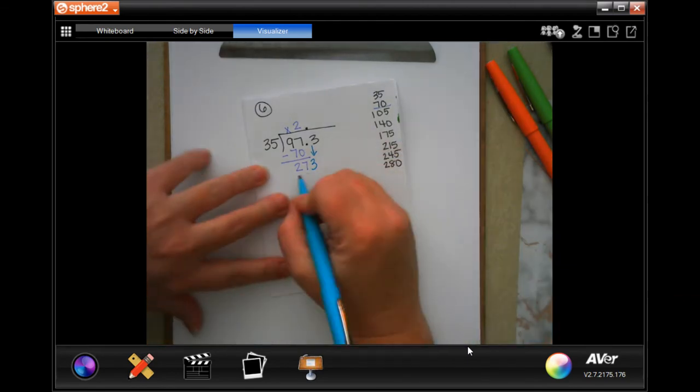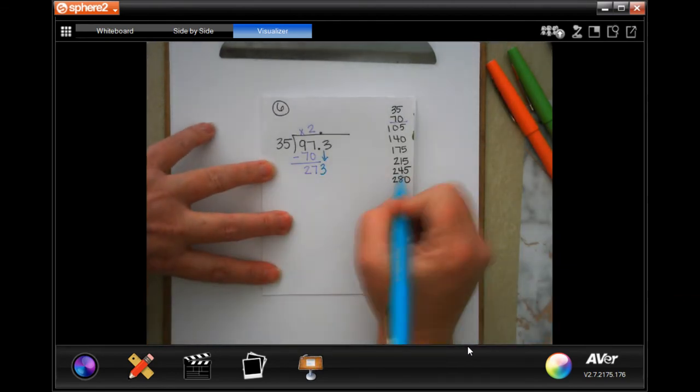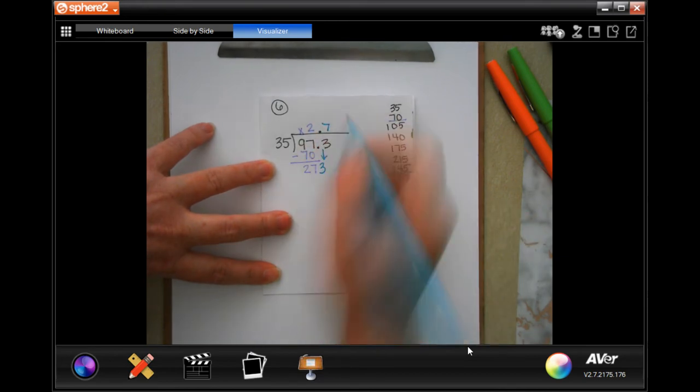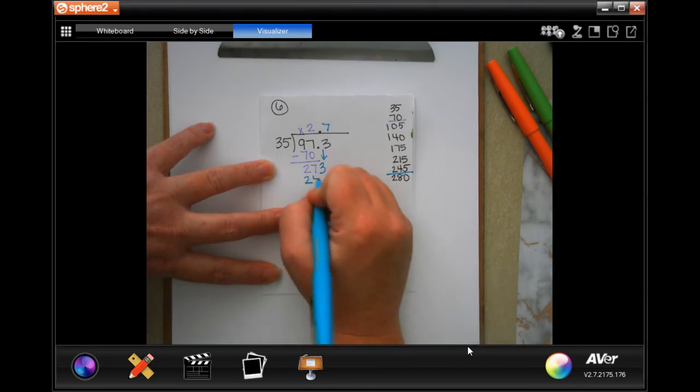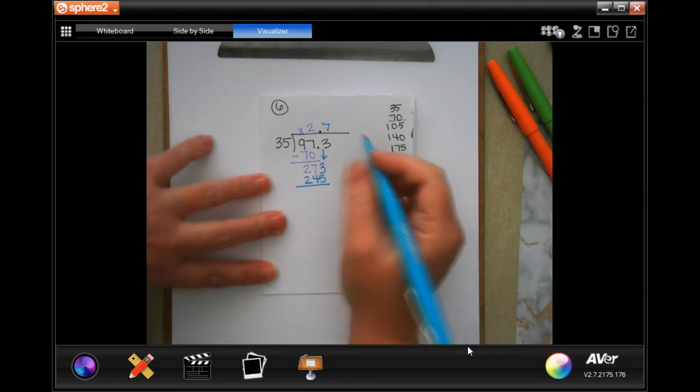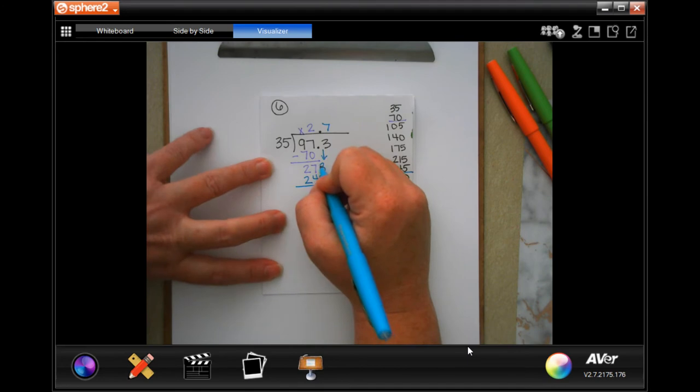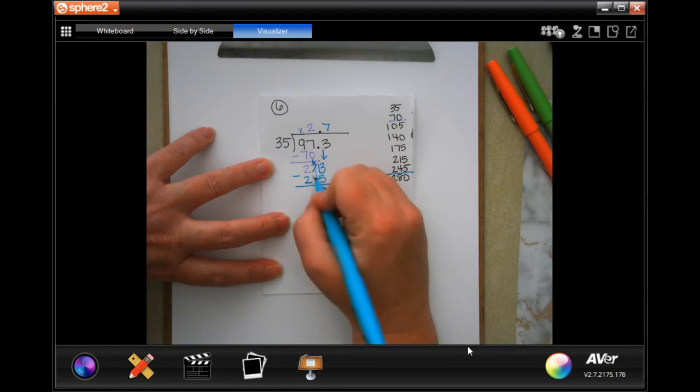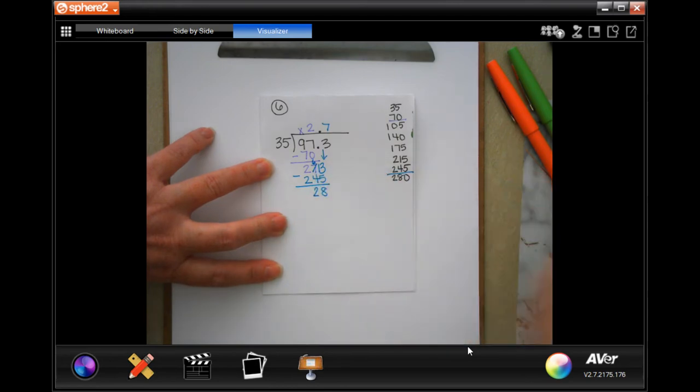Now, 35 into 273, it looks like the most I'm going to get right there is one, two, three, four, five, six, seven times, which is 245. When I do that math, three can't take away five. I'm going to go ahead and borrow one to make 13. 13 take away five is eight. Six take away four is two.